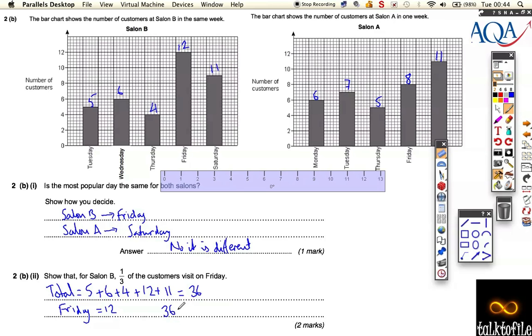And then the Friday total was equal to 12. And we just show they're the same. Well, to find a third of something, we've just got to do 36 divided by 3. And that comes out as 12. So we showed that Friday was 12. We added all the totals up. Two marks straight away there.